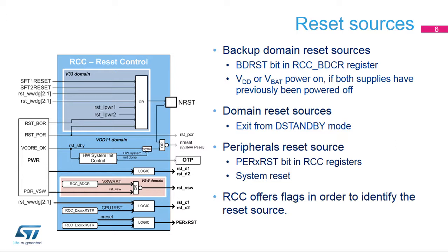The clock for the RTC-AWU can be selected from among LSE, LSI, or HSE divided. When HSE divided is used as a kernel clock for the RTC-AWU, the frequency cannot exceed 1 MHz. If LSI is used as a kernel clock for the RTC-AWU, the RTC-AWU will no longer be clocked if the VDD and V-Core supply are removed. If HSE divided is used, the RTC-AWU will no longer be clocked if the system goes to stop mode or if the V-Core supply is removed. The LSE can remain enabled in all low-power modes and in VBAT mode.